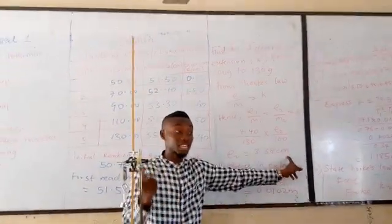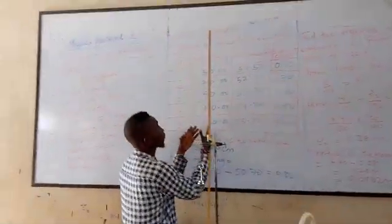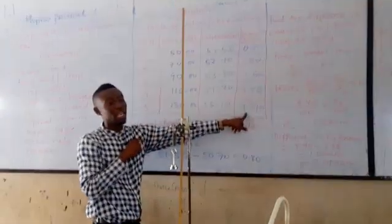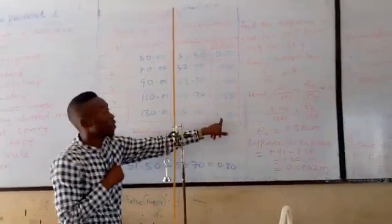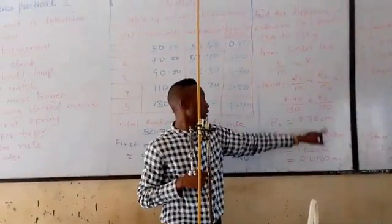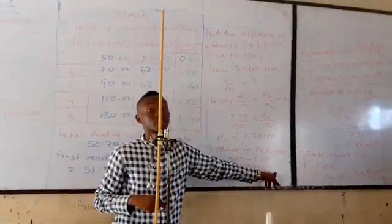So the difference in extension, they are trying to tell us, is the difference in extension from 130 grams to 100 grams. The extension at 130 grams is 4.40 minus by the extension we get, 3.38, will have that the extension is 1.02 centimeters,